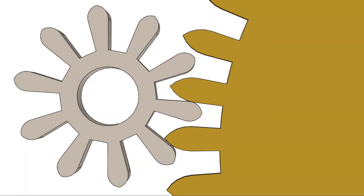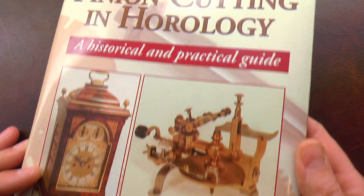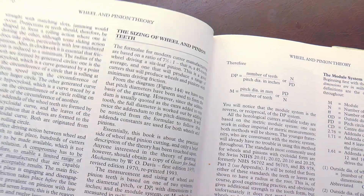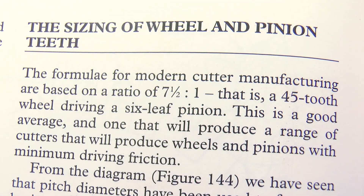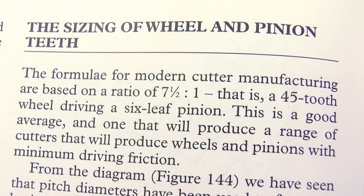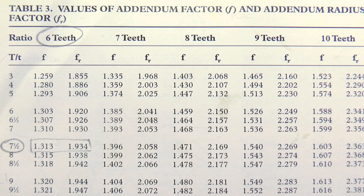One of the key differences between the two systems is that the cycloidal profile has these straight, apparently radial flanks to the tooth profile. I say apparently because while for pinions they are indeed radial, for the larger gears otherwise known in horology as wheels, we make use of a helpful simplification of the standard. Modern cutters are based on the specific mesh of a 45 tooth wheel and a 6 leaf pinion, and the constants provided by the standard are determined for that specific combination, regardless of what the actual gear tooth counts happen to be.